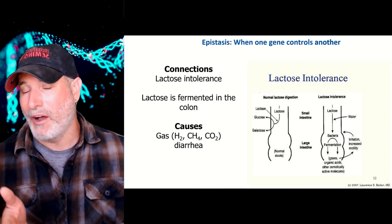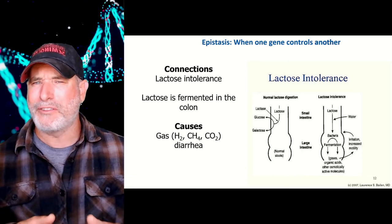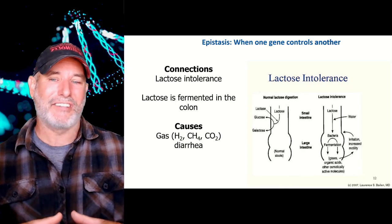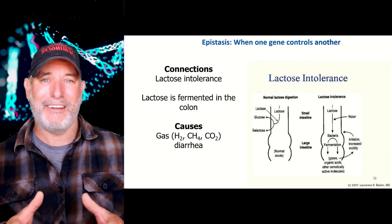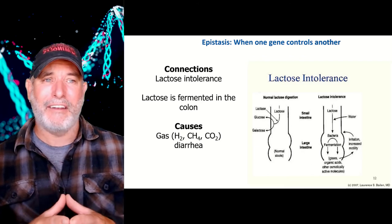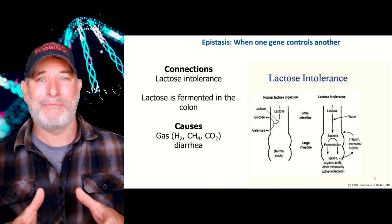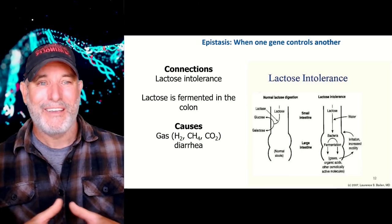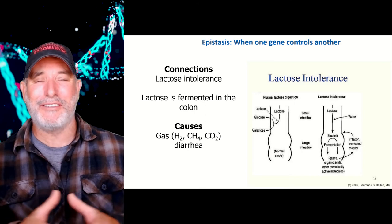For those of us who are lactose intolerant, we can't break down the sugar lactose — a disaccharide made up of glucose and galactose. Because we can't break it down in our small intestine, it passes into the large intestine where bacteria ferment it without oxygen, producing gases like carbon dioxide and methane, and it can also cause diarrhea. That fermentation is the source of the flatulence.